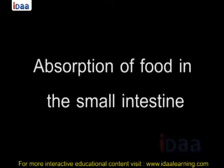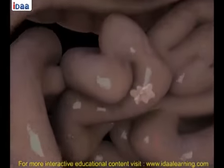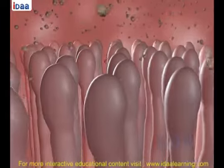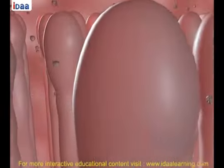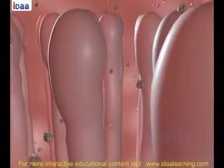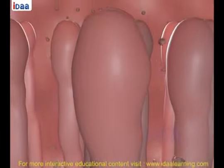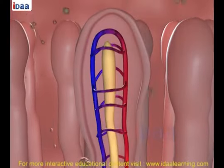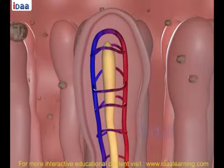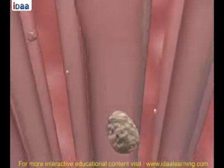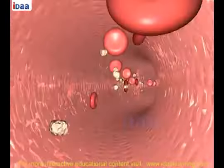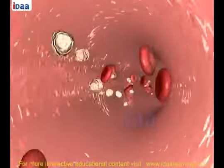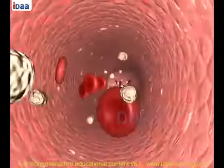Absorption of food in the small intestine: the inner wall of the small intestine has finger-like projections called villi, which have a network of thin blood vessels close to the surface. The villi increase the surface area of absorption and absorb the digested food materials. The substances absorbed are transported through the bloodstream to different organs in the body and are used to build complex substances like proteins. This process is called assimilation.